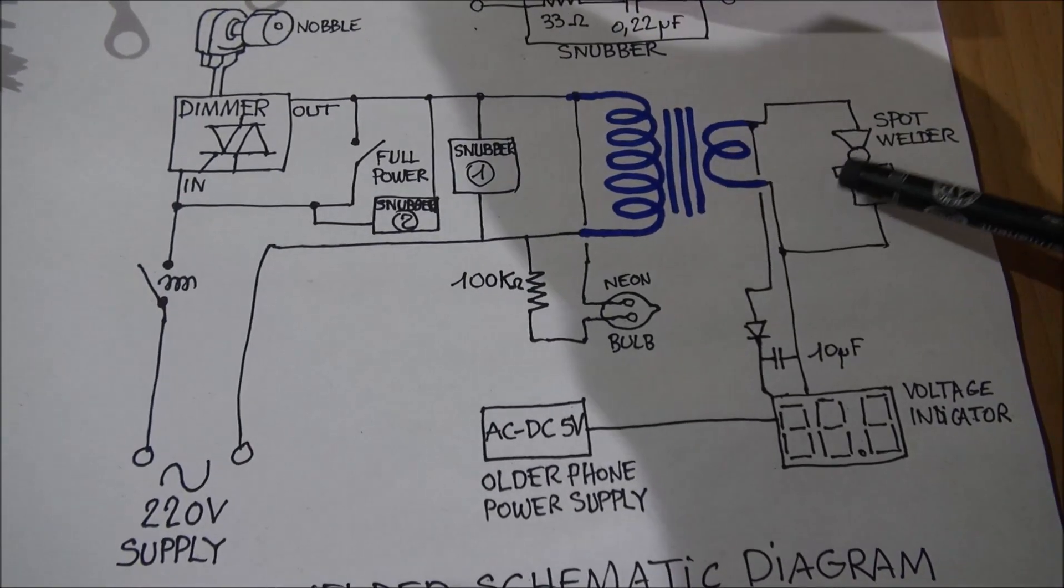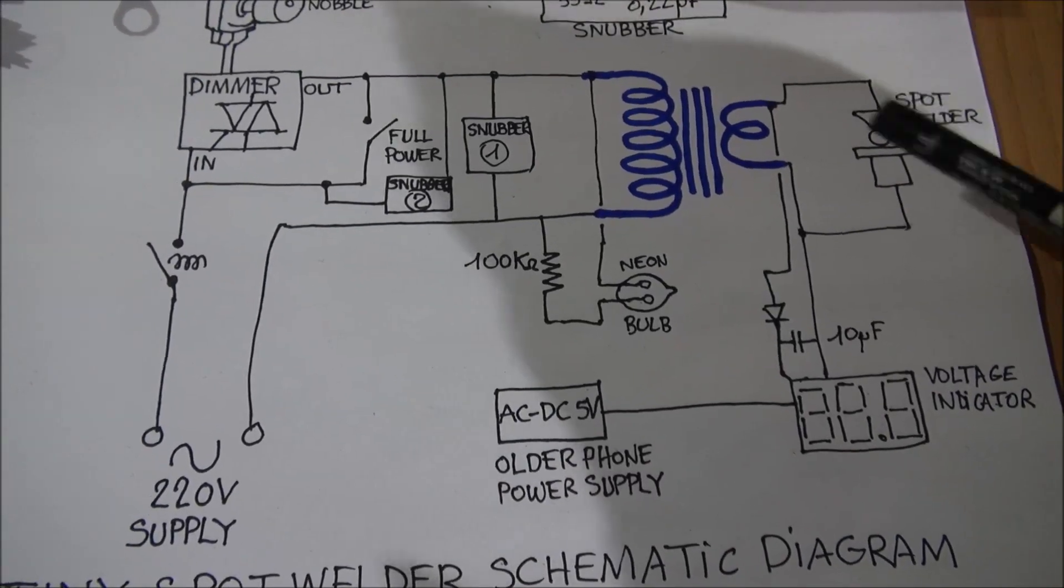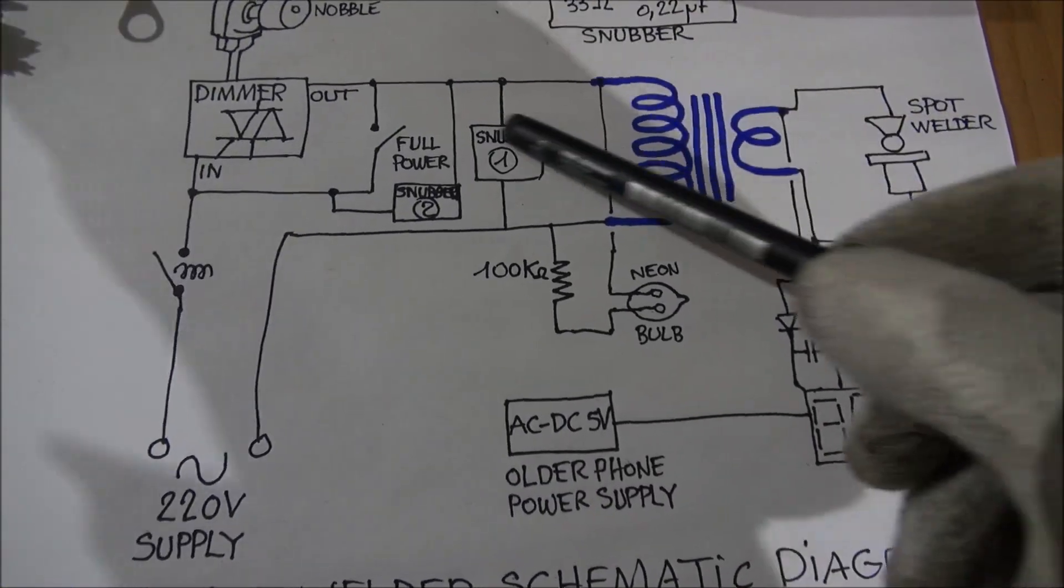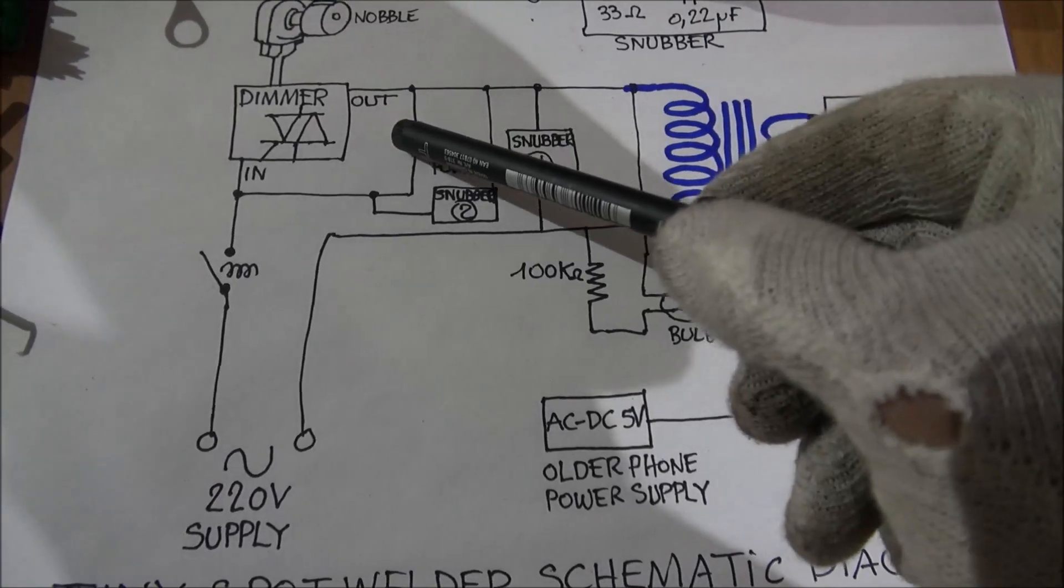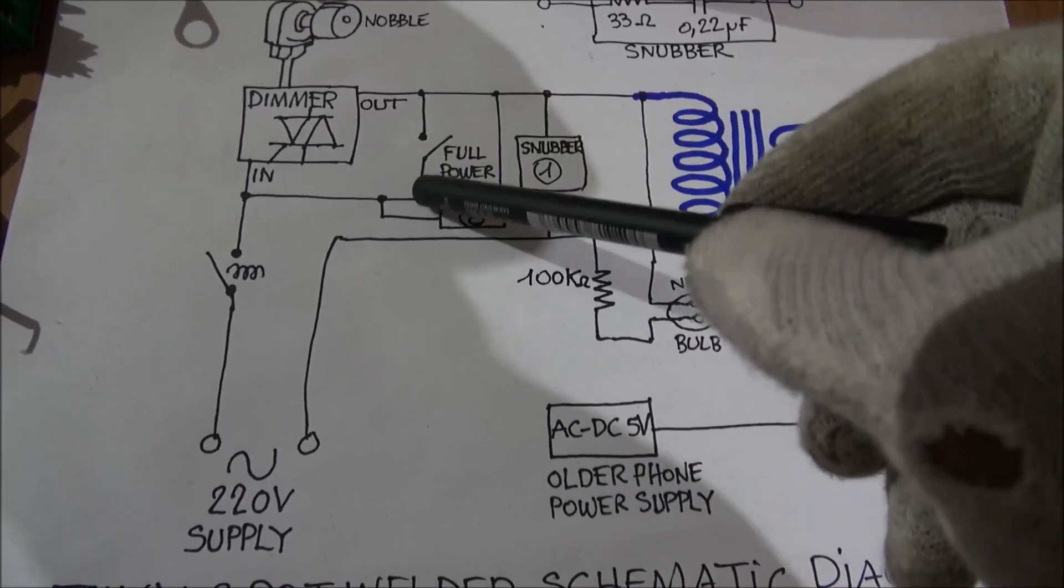If you want to have the full power, you must make a short circuit here to deactivate the dimmer.